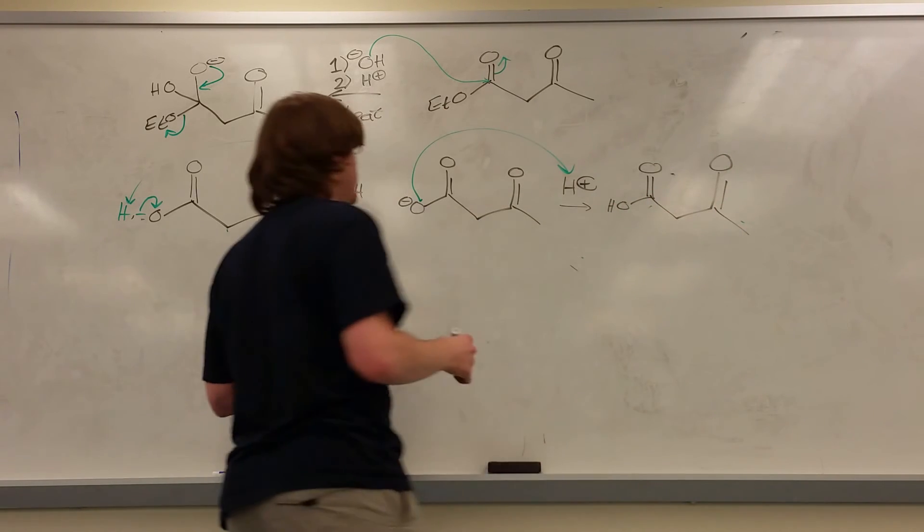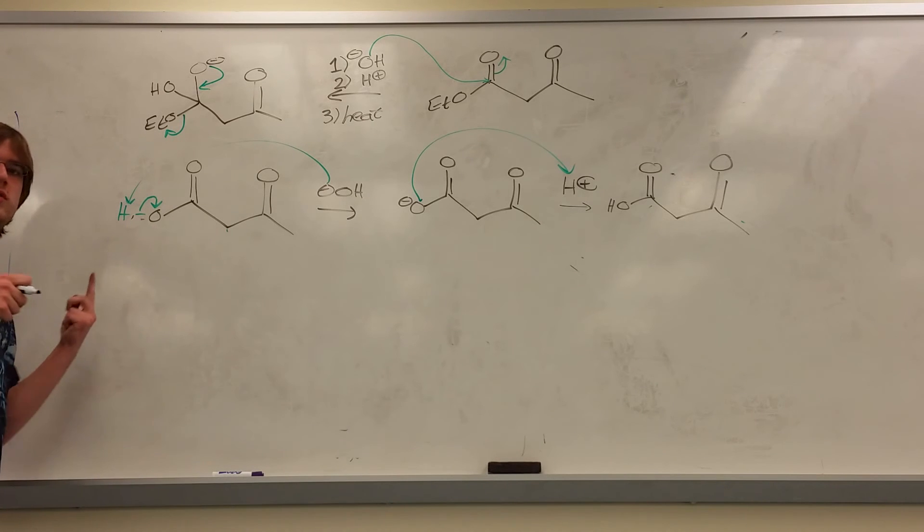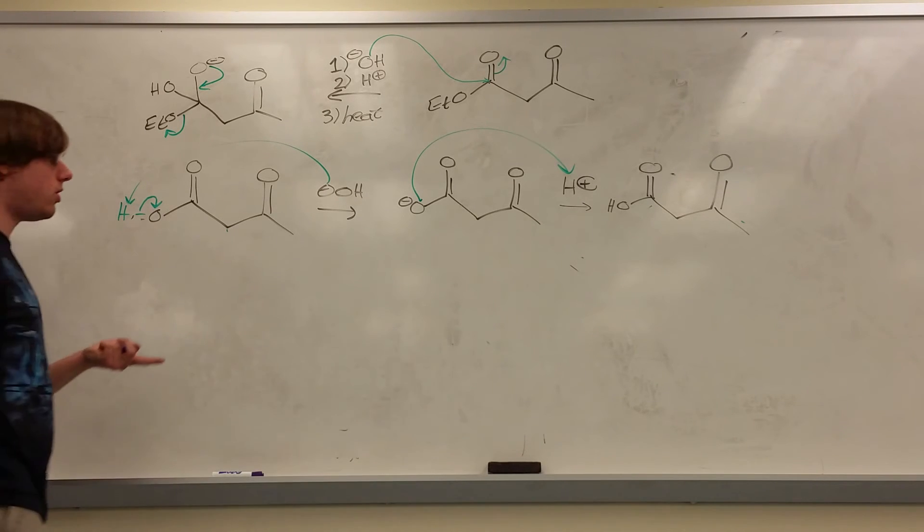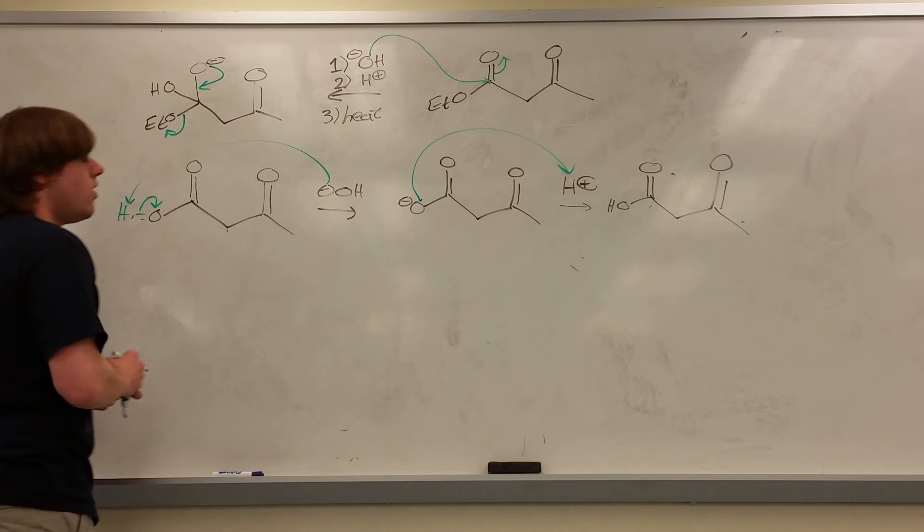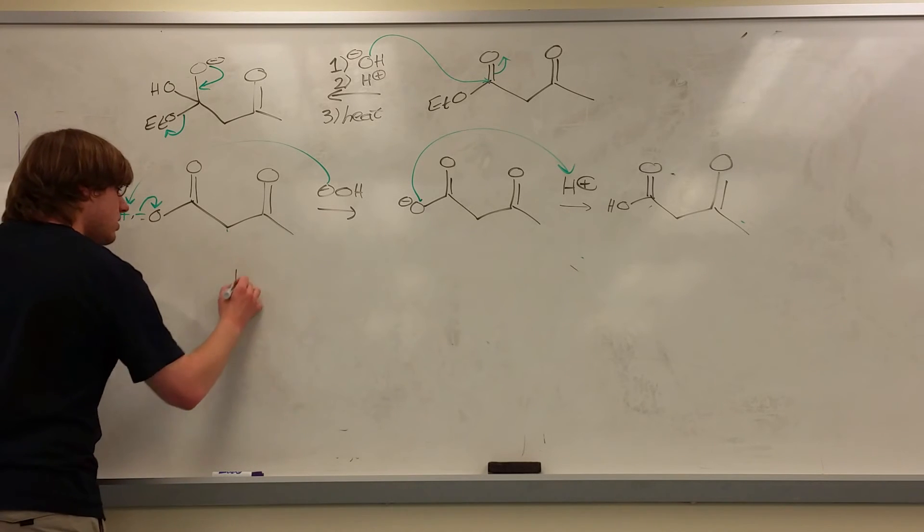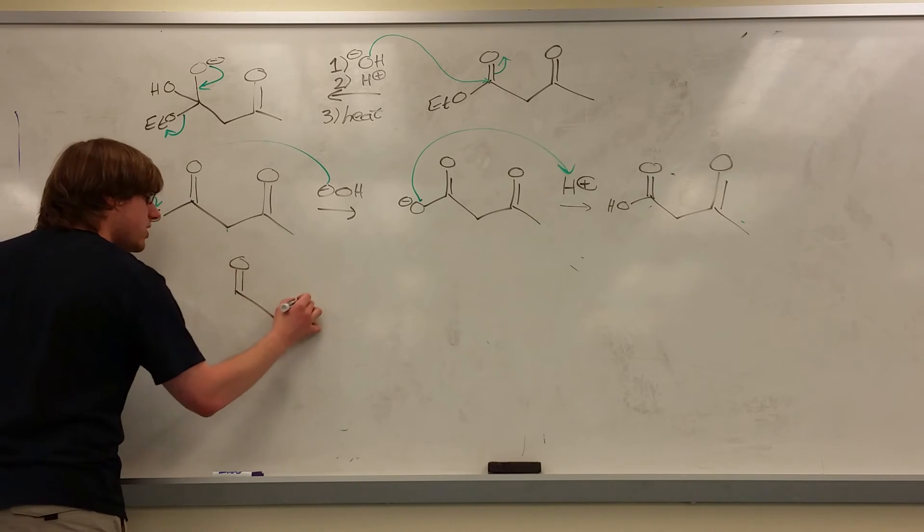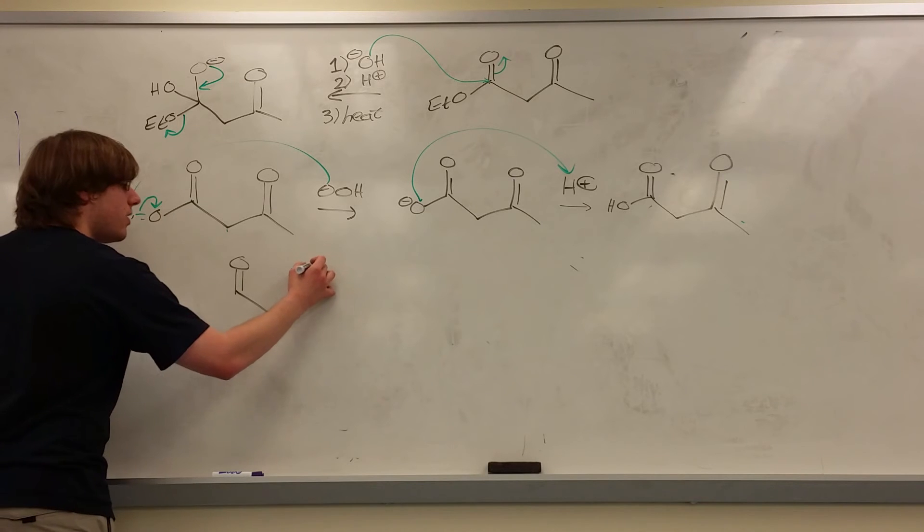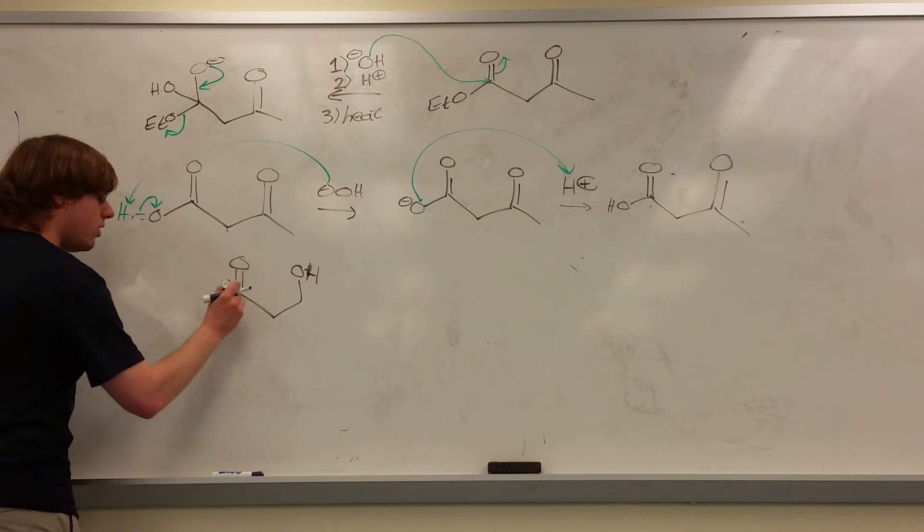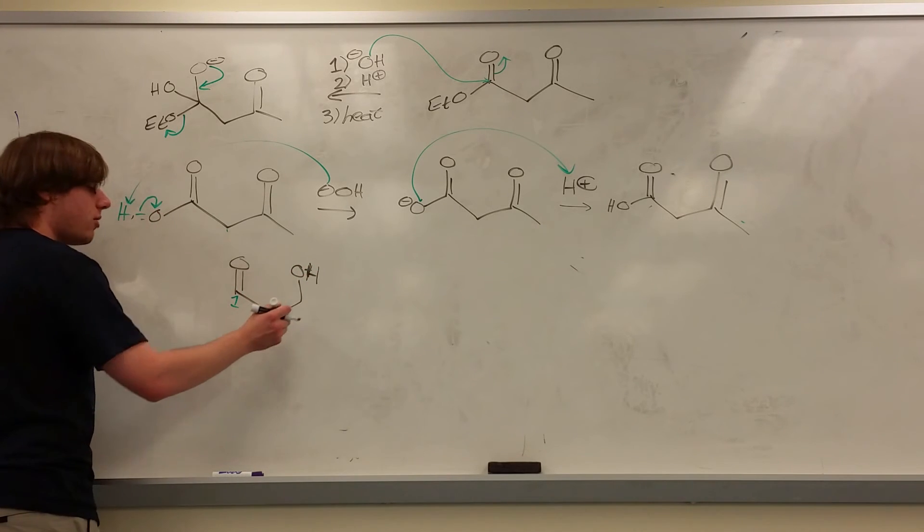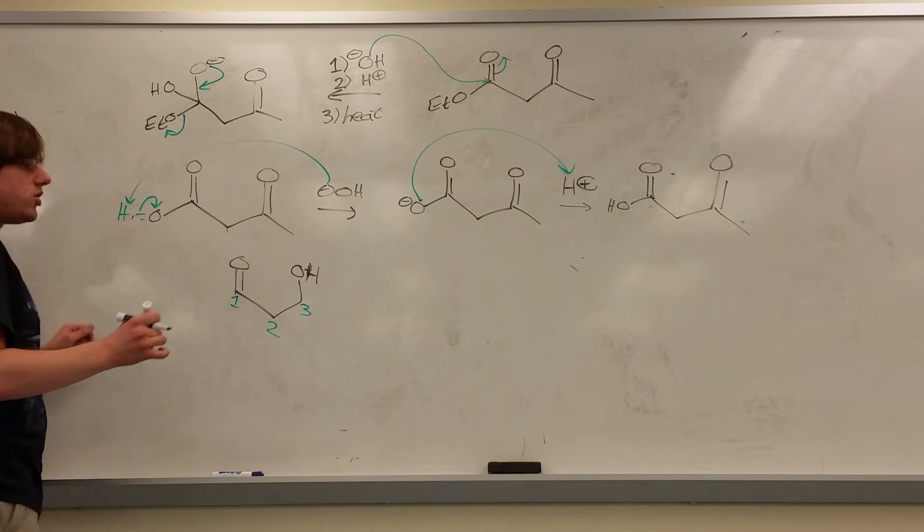So those first two steps, their purpose is to make that carboxylic acid. And then heat. Whenever you see the word heat, there are two possibilities. The condensation that we talked about for the aldol reaction or decarboxylation. We saw that the aldol condensation occurs when you have a setup of carbonyl on one, alpha carbon on two, and OH on carbon three.